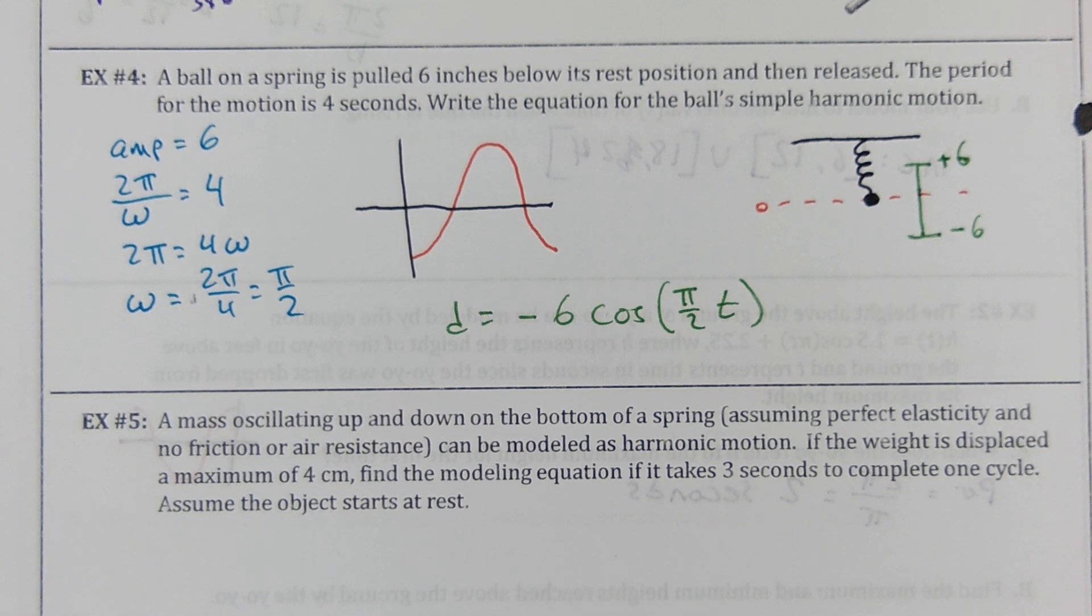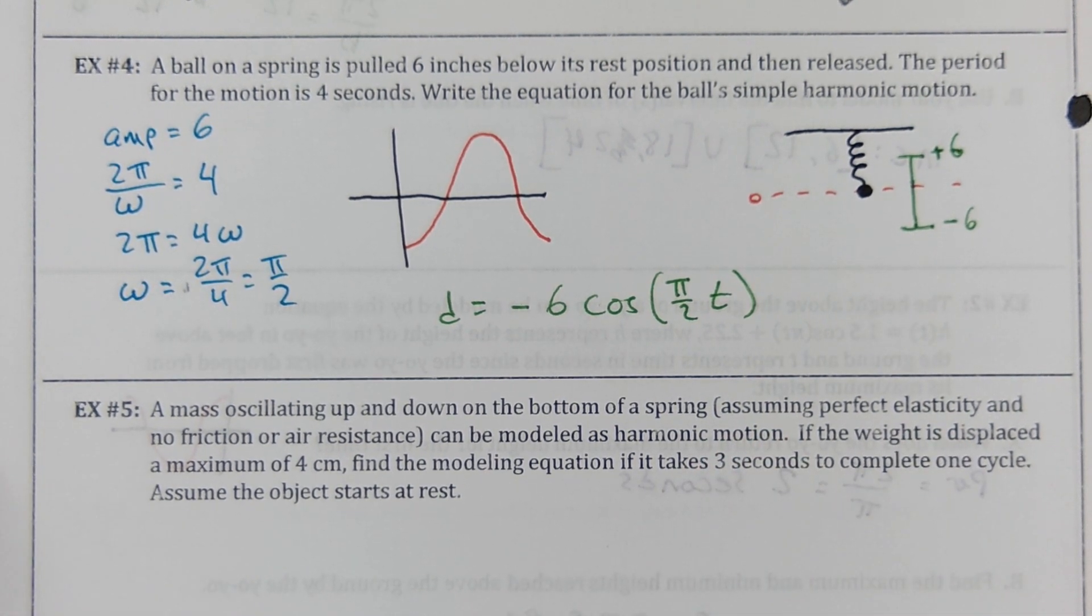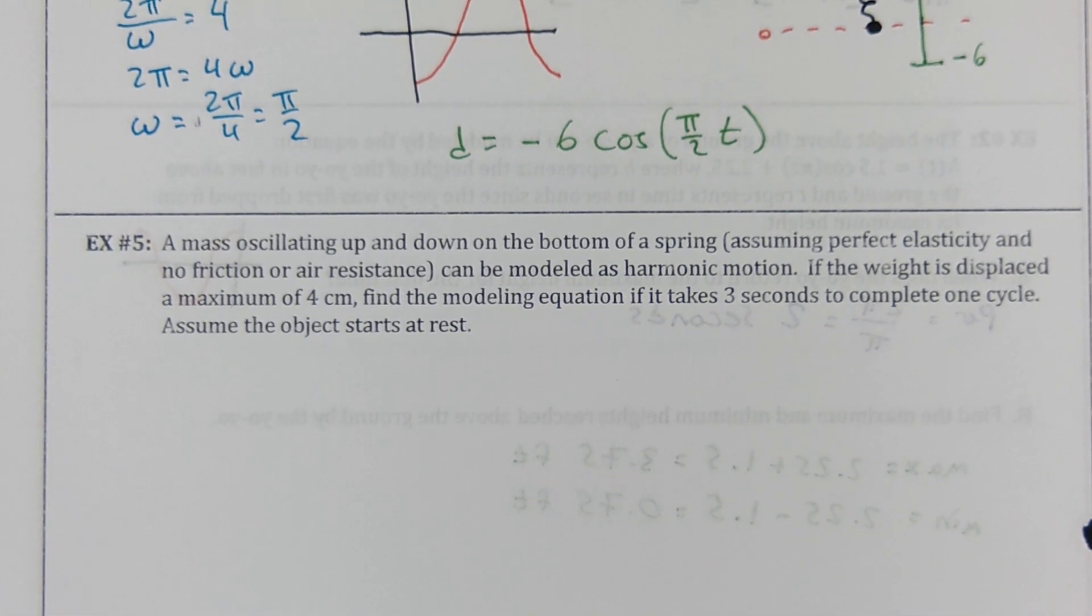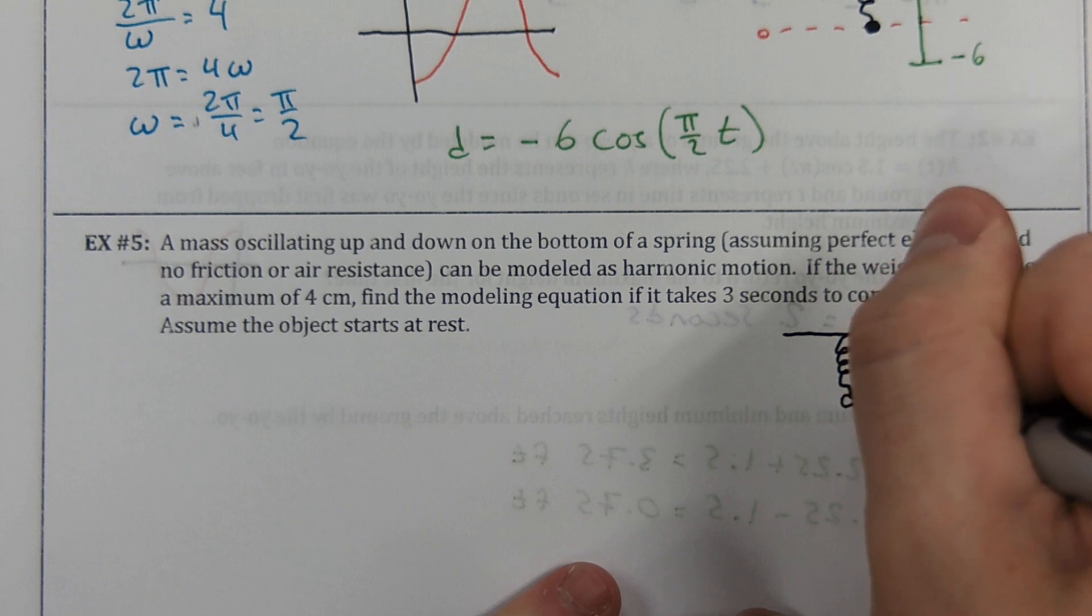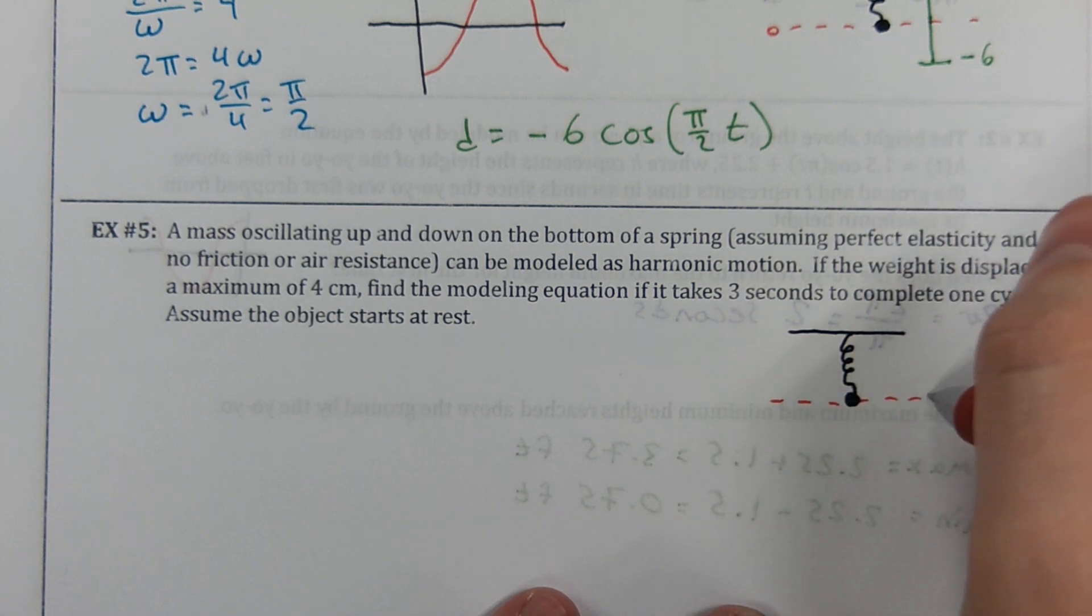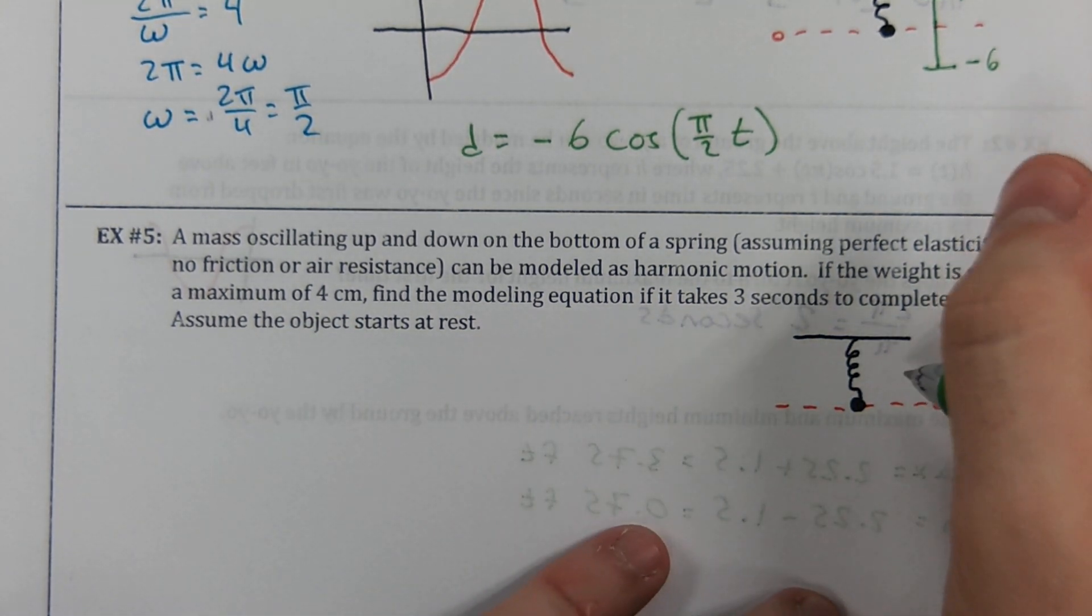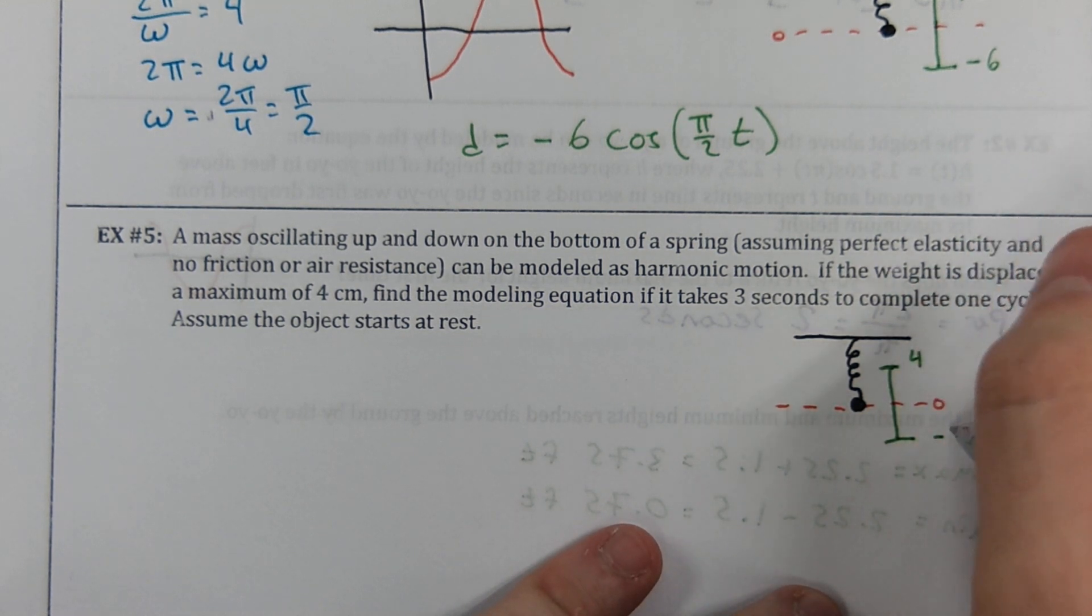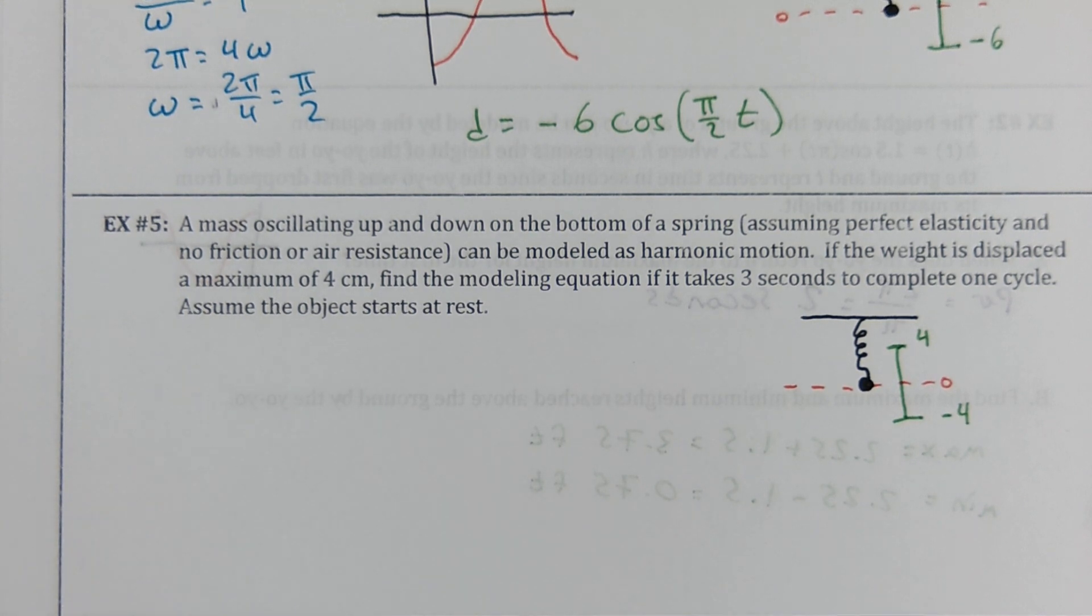Next one is another mass oscillating on a string. A mass oscillating up and down on the bottom of a spring, assuming perfect elasticity, no friction, air resistance, no loss to heat, anything like that, can be modeled as harmonic motion. If the weight is displaced a maximum of 4 centimeters, you know what, let's just go ahead and draw this thing. Let's see. Got ourselves a spring. Got ourselves a mass. We know that when it's at rest, its displacement is 0. We know that the displacement is a maximum of 4. So we can go up 4 and we can go down 4. Then what's the amplitude? 4. Yeah. Amplitude is 4.